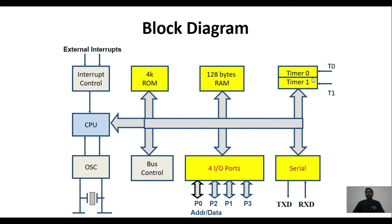We have two timers: Timer 0 and Timer 1. These timers can also be used as counters, in which external clock pulses are given as input. Those clock pulses can be given on pins T0 and T1 — T0 is for Timer 0 and T1 is for Timer 1. Both timers are 16 bits and can be operated in different modes.